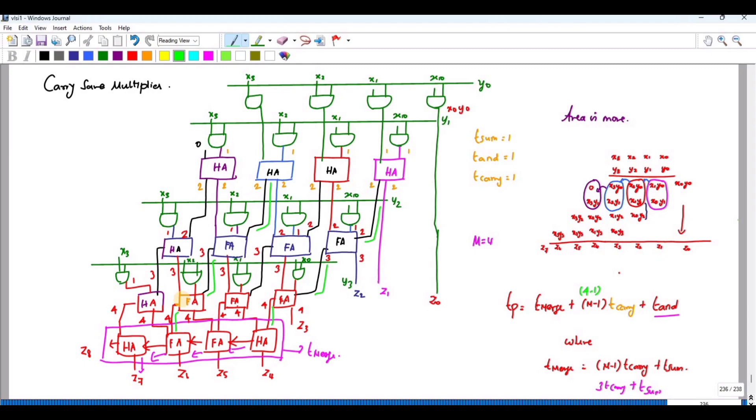It has an advantage that its worst case critical path is very much smaller compared to the array multiplier. That's all about the video. Thank you.